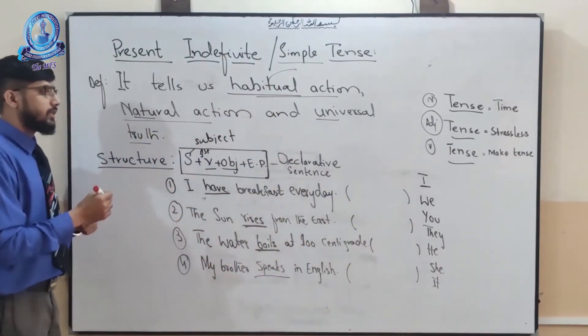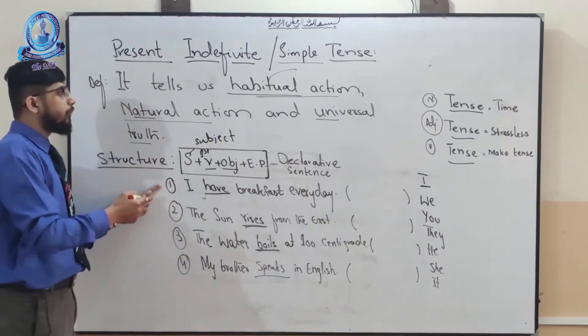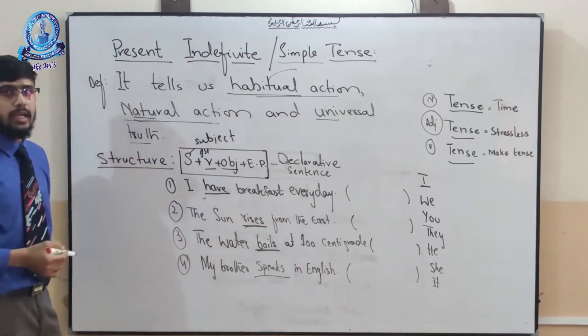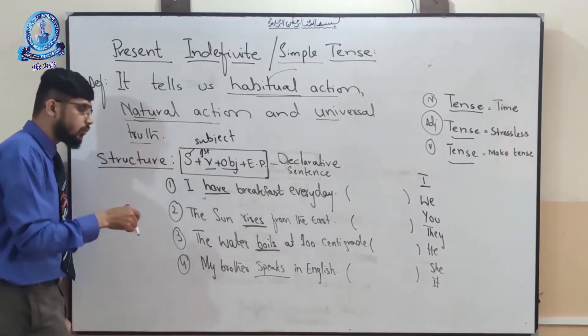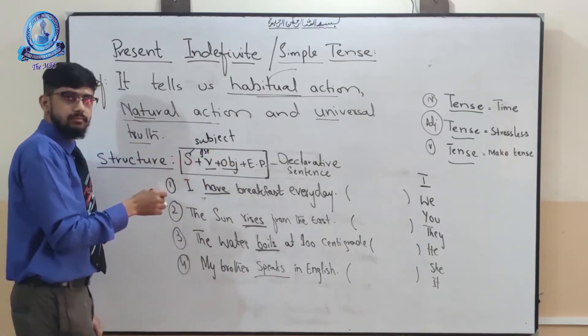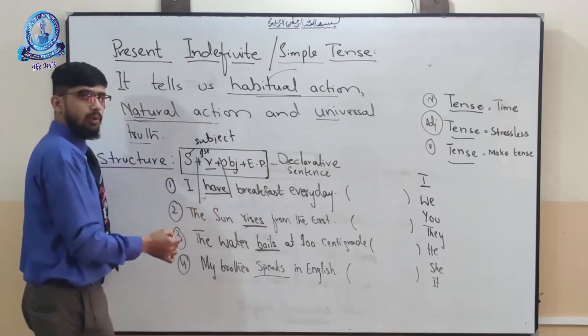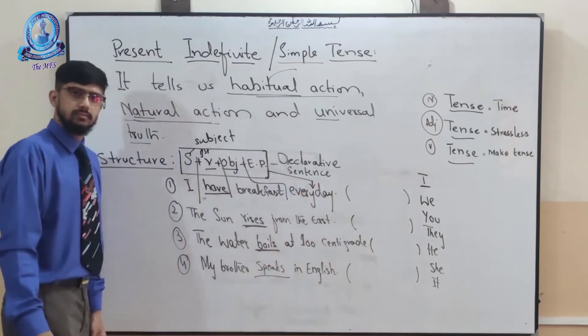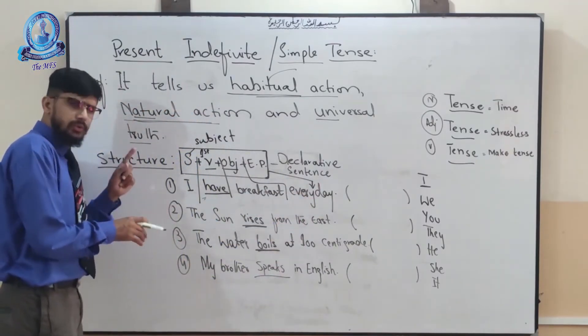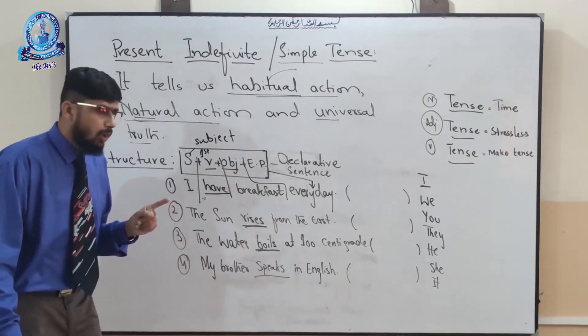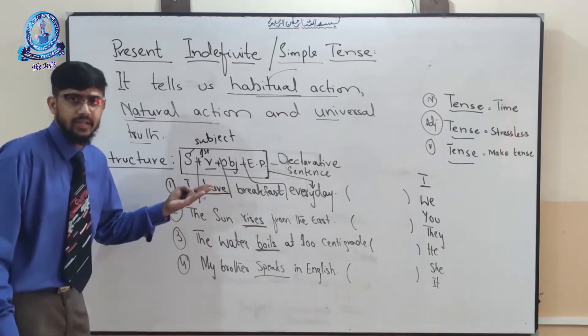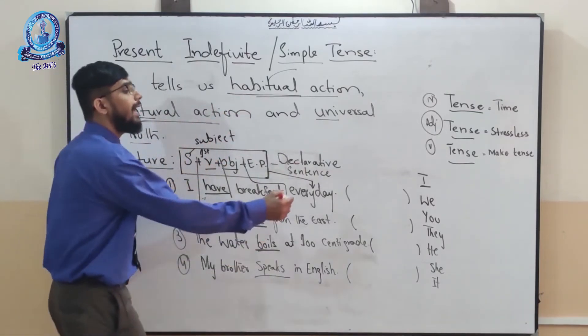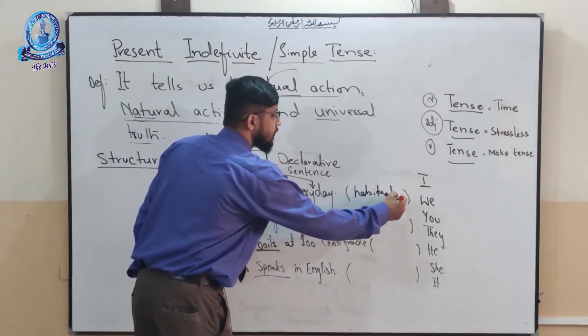So let's come towards sentence. I'm going to give you the different examples of habitual action, natural action, and universal truth. The first example I have put over here, that is called, I have breakfast every day. This is subject, this is verb, this is object, and just to understand in an easy method, it's called EP. This is the first sentence. And what do you think, according to the definition, what kind of sentence is this? What is it telling us? What action is it telling us? A natural action, universal truth, or habitual action?